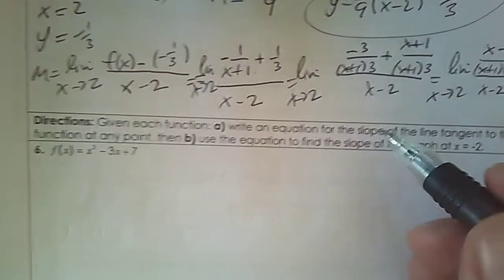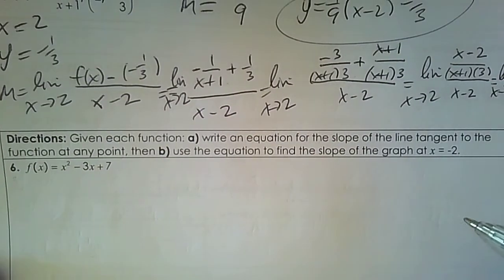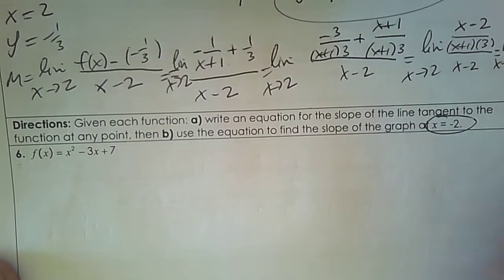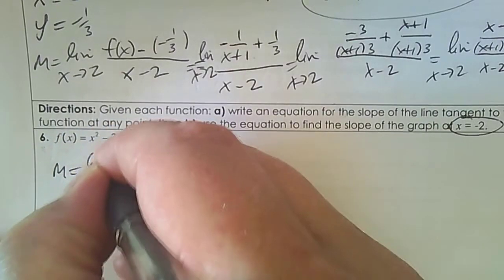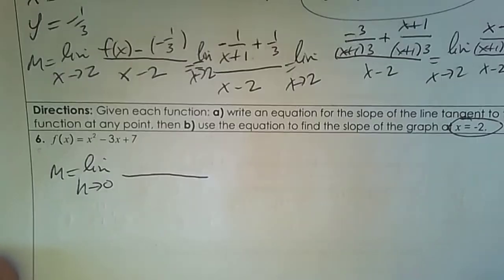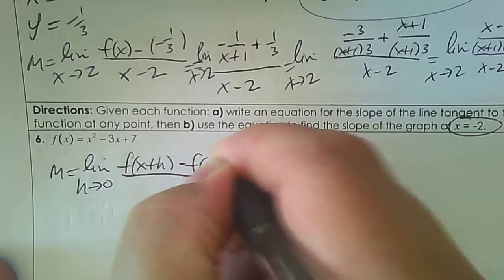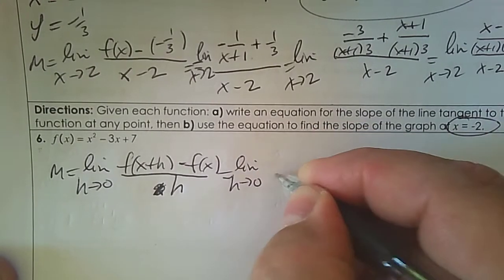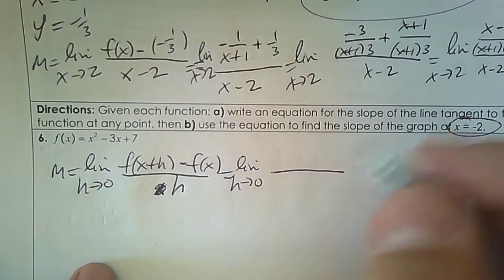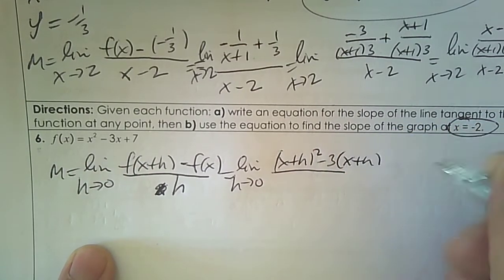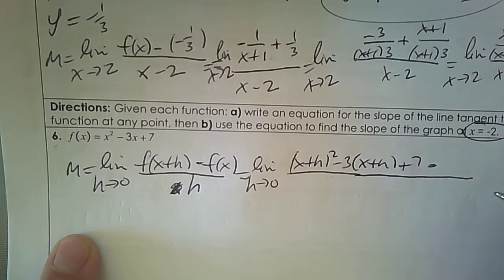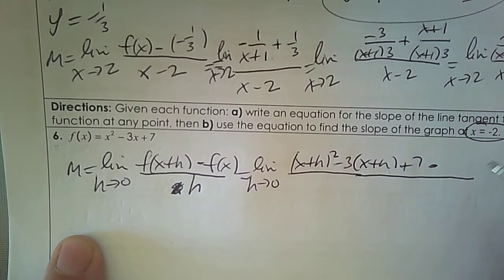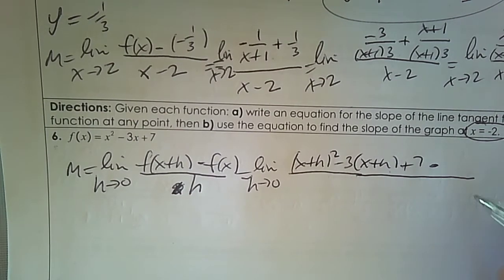Number 6: given each equation, write an equation for the slope of the line tangent. We're going to use the other formula because I know it gives me an x value, but we need to practice the other one as well. To find the slope, we use the limit as h approaches 0: [f(x+h) subtract f(x)] over h. Step 1: plug in (x+h) to get (x+h)² minus 3(x+h) plus 7. Then subtract f(x) in parentheses, which is x² minus 3x plus 7, all over h.